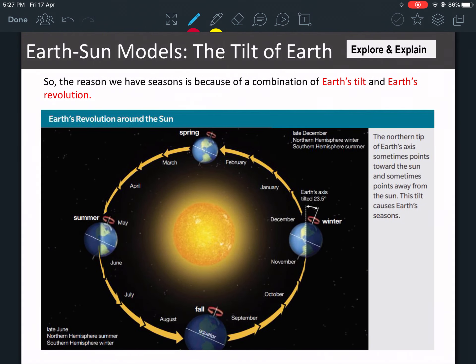Let's go back here. So this is how you can see the seasons. This is fall, this is spring, this is summer, this is winter. The northern tip of the Earth's axis sometimes points towards the Sun, like here in May, and sometimes points away from the Sun, like here in December. This tilt causes the Earth's seasons. This is why we have seasons because of the tilt and the rotation. So we have two reasons why we have seasons. Reason number one is the Earth's tilt and reason number two is the Earth's revolution around the Sun.